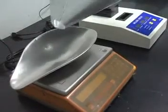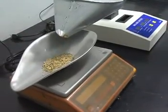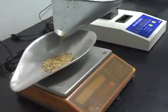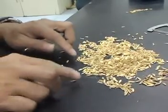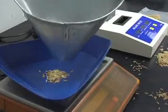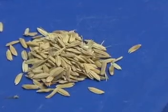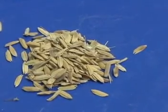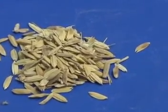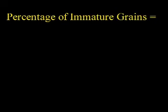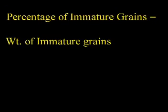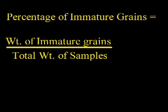First, select a 25-gram grain sample. Then select, segregate, and weigh the immature grains in the sample. Finally, calculate the percentage of immature grains in the sample using the formula: the weight of the immature grains divided by the total weight of the samples, multiplied by 100.